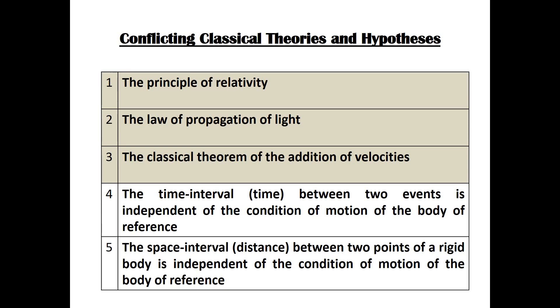He goes on to examine item four on our list: the time interval, or time between two events, is independent of the condition of motion of the body of reference. To do this, he again conducts a thought experiment and once more uses the coordinate systems of the embankment and the train.